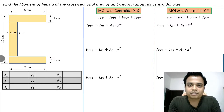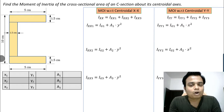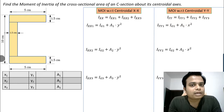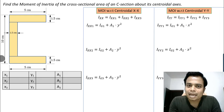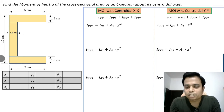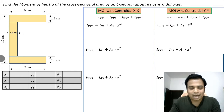Hey guys, this is Manas, your friend and tutor. In today's video we'll try to find the moment of inertia of a C-section with respect to its own centroidal axis. The first step is to find the exact location of the centroid, and in step two we'll find the MOI of the C-section with respect to its own centroidal X and centroidal Y.